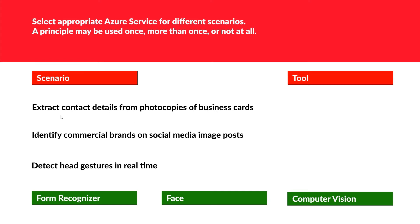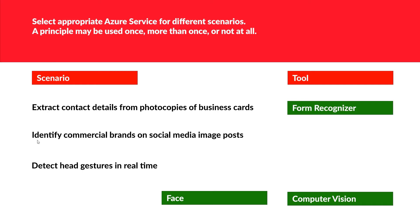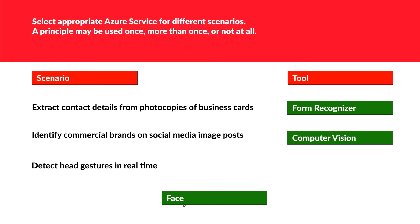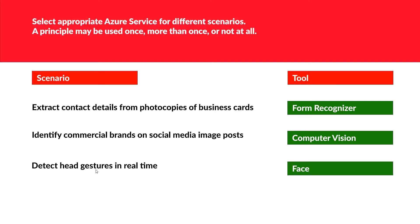This drag-and-drop question asks you to choose the correct Azure service. For extracting contact details from photocopies of business cards, the answer is Form Recognizer — any time you see extracting contact details from cards or forms, that's Form Recognizer. For identifying commercial brands on social media posts, that is Computer Vision, not Face, because it's about a post not a human portrait. For detecting head gestures in real time, that is Face API, since the keyword is head gesture.